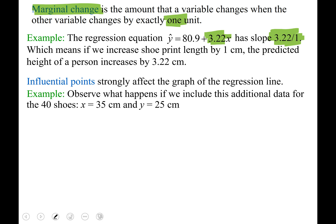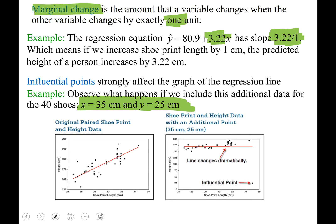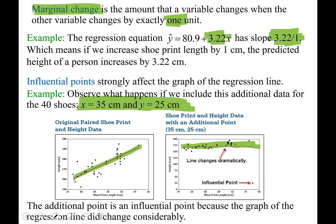Observe what happens if we include this additional data for the 40 shoes. We're saying that this guy is 35 centimeters tall with a shoe print length of 25 centimeters, which is not possible physically. But watch what that one point does to our graph. Here was our best fit line before, and when we throw in this point, it's called an influential point because look what it does to our graph. Makes that line change dramatically. If that is the case, the additional point is considered an influential point because it changes the regression line considerably.